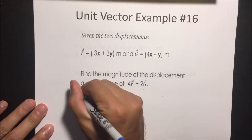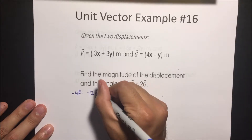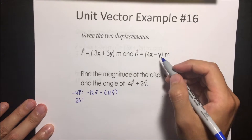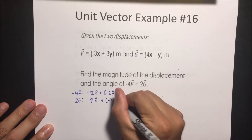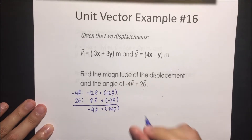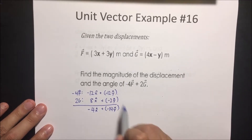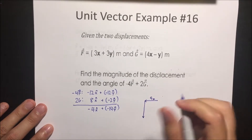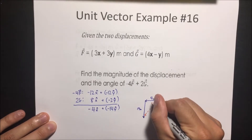We do the same thing. Negative 4F is going to be negative 12 in the x direction plus negative 12 in the y direction. Then 2G is going to be 8 in the x direction plus negative 2 in the y direction. Adding these together gives us negative 4 in x and negative 14 in y. We draw this out since we want the magnitude and angle, not unit vector notation.